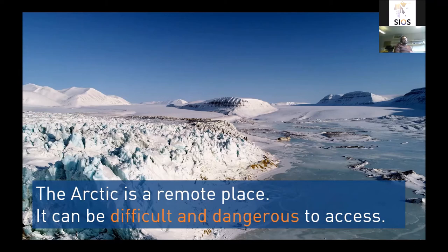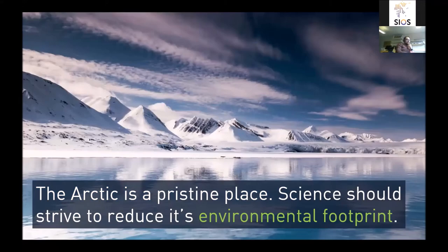With a drone we can fly there and access it. Getting to a glacier like this also requires driving several hours through quite dangerous terrain, so it's much easier to use a flying platform or satellite for observations. We also shouldn't underestimate that the Arctic is a pristine place — there's not a lot of pollution here — and we as scientists should think about the environmental footprint of the work we do.